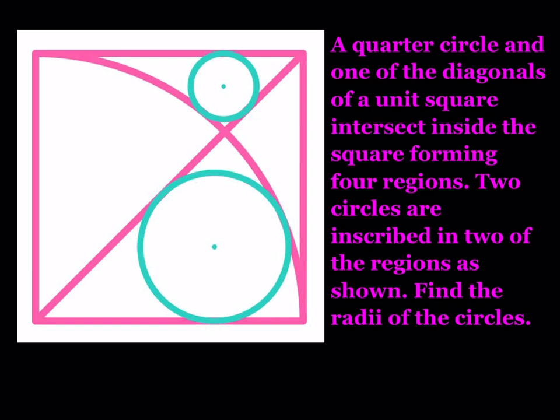We're going to find the radii of the circles, but first we need to make some connections. Let's start with the larger circle. I'll go ahead and start here at the center of my quarter circle and connect that to the center of the bigger circle. As you know, when dealing with geometry puzzles such as this one, it's important to connect the two centers — that's going to give us a lot of good information. So let me go ahead and draw the segment that goes through the center here. This is the center of my larger circle.